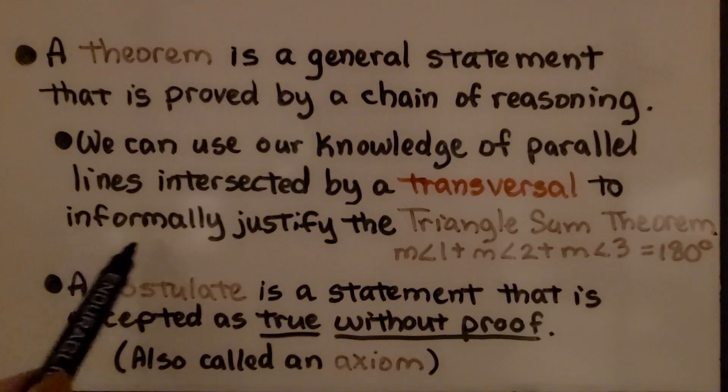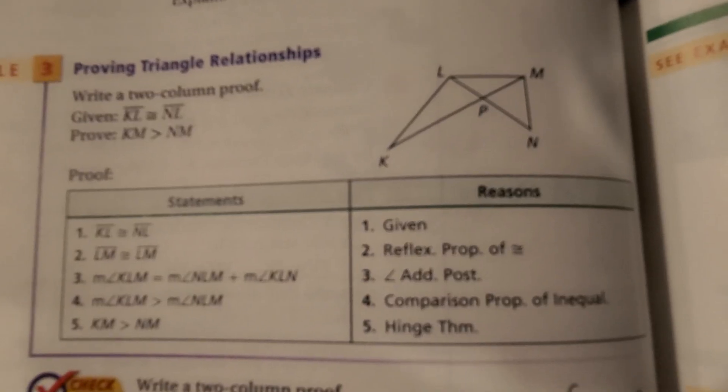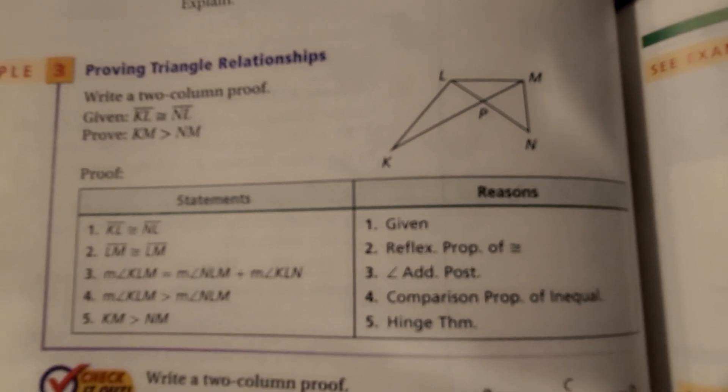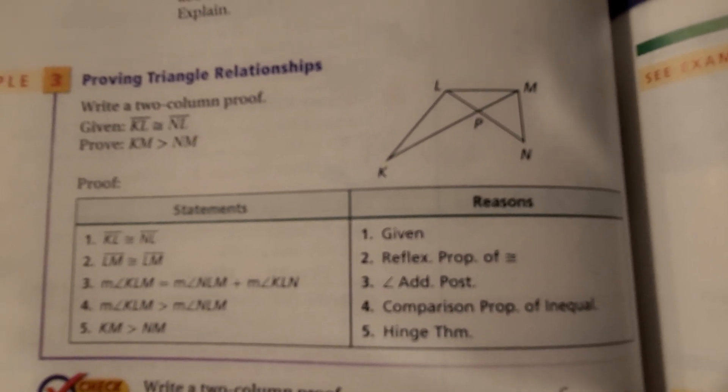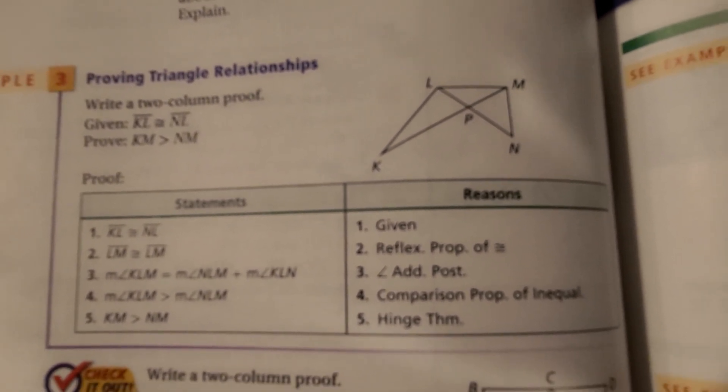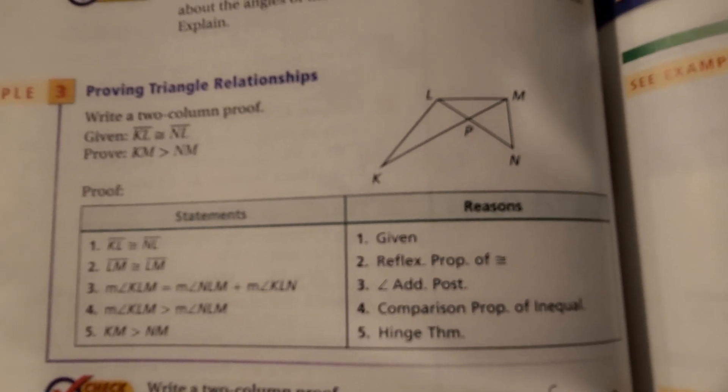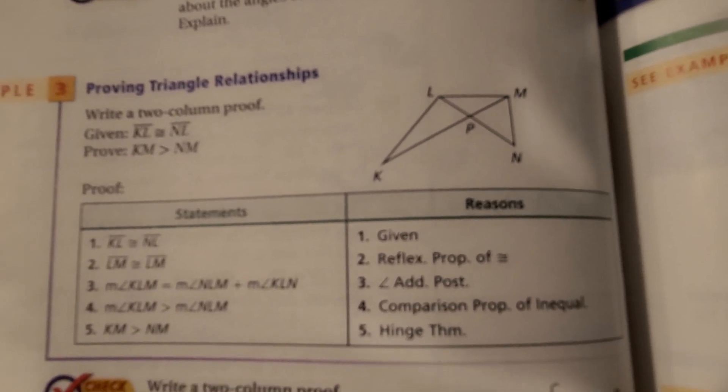Notice it said we're going to informally justify. When you get into geometry, you're going to be doing formal proofs. This is called a two-column proof. We have our statements on one side and our reasons on the other. So we're not doing that this time.